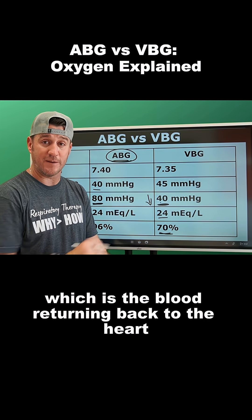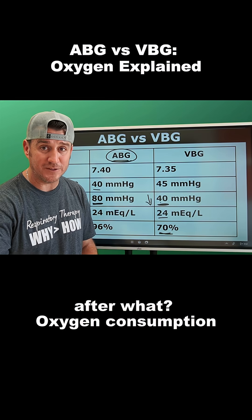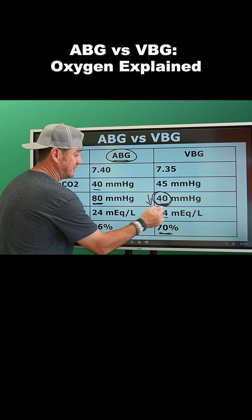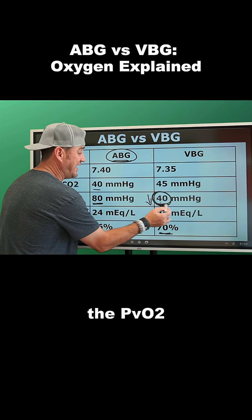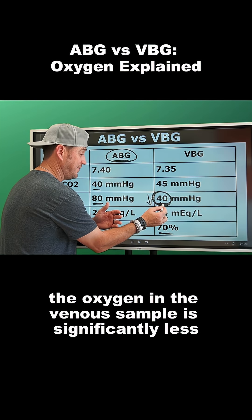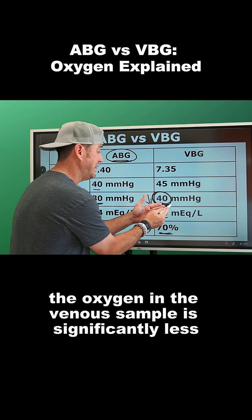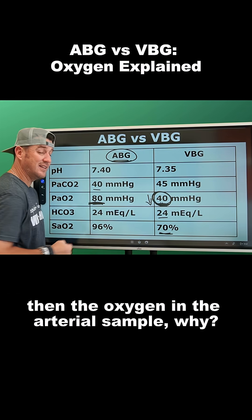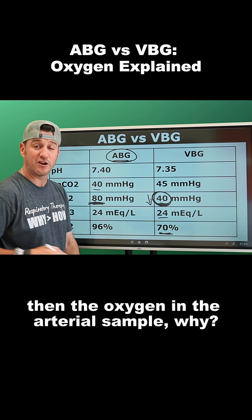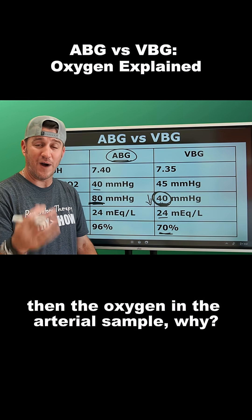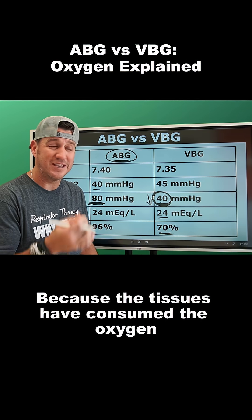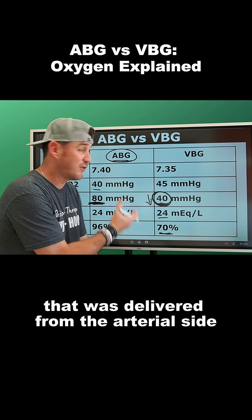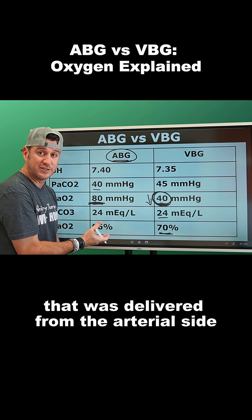...it makes sense that the PvO2 — the oxygen in the venous sample — is significantly less than the oxygen in the arterial sample. Why? Because the tissues have consumed the oxygen that was delivered from the arterial side.